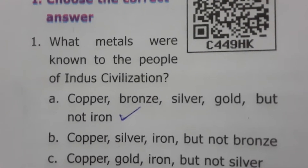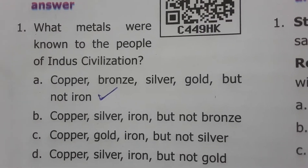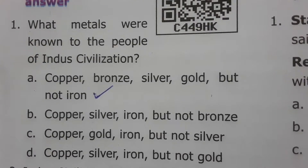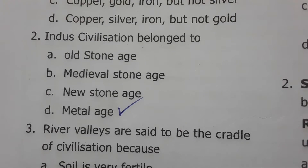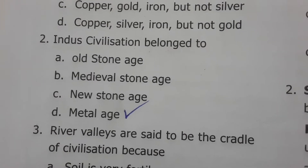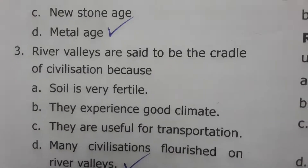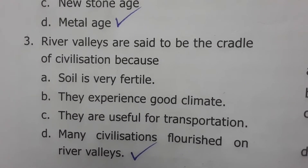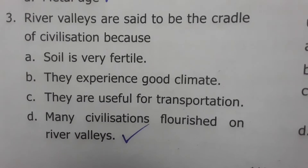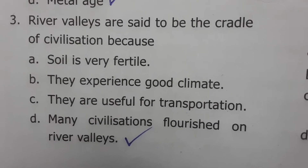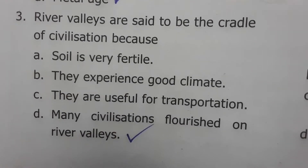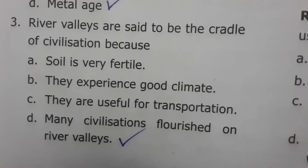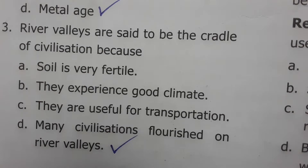Now let's see the book-back evaluations. Which metals were known to the people of Indus civilization? They knew about copper, bronze, silver, and gold but not iron. The Indus civilization belonged to the metal age because they used bronze metal. River valleys are said to be the cradle of civilization because many civilizations flourished on river valleys due to continuous water supply for drinking, washing, bathing, and irrigation.